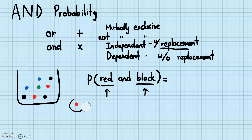For dependent events, I pick a red marble and a black marble without replacement — meaning I do not put the first marble back in the bag. So what would the probability be of picking a red one and then a black one without replacement? Let's find both of these probabilities.